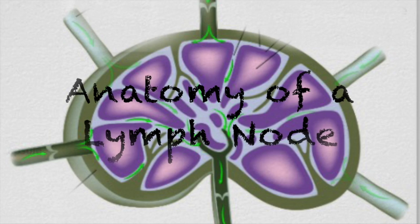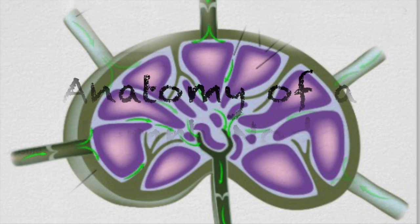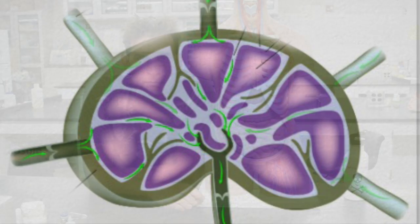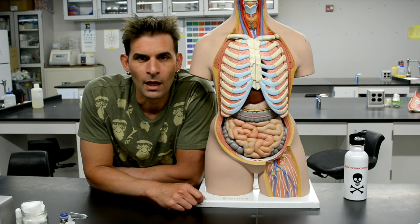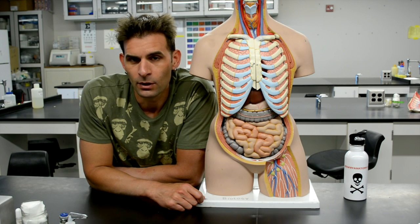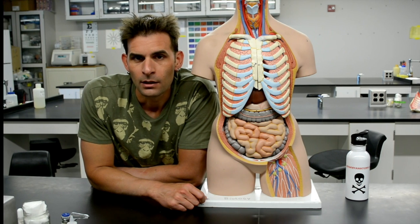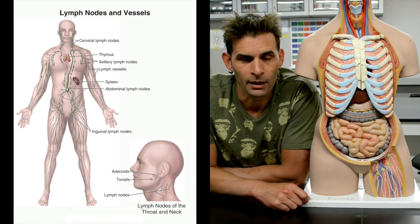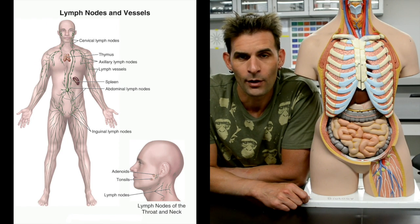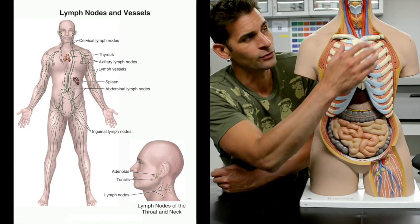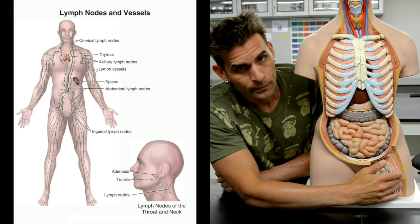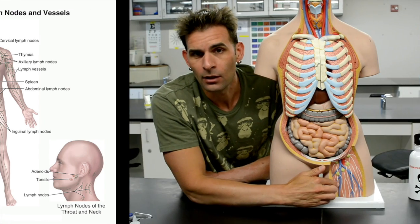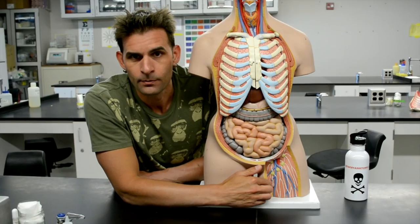In this video, we're going to be discussing a lymph node. Lymph nodes are spread throughout the entire body. They are, however, more numerous in certain areas such as the cervical, axillary, and inguinal. And now let's take a closer look at an individual lymph node.